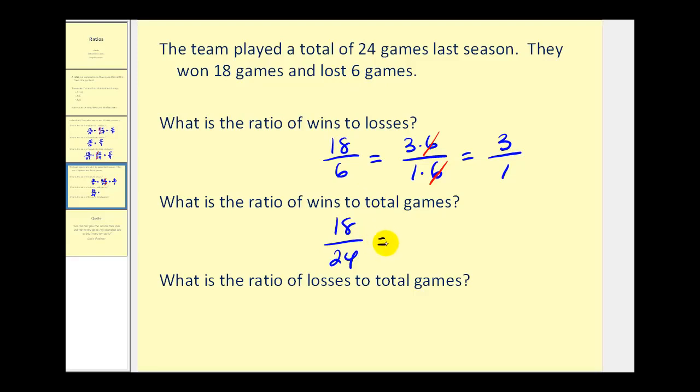This simplifies. The greatest common factor of 18 and 24 would be 6, so 18 is 6 times 3 and 24 is 6 times 4. The simplified ratio would be 3 to 4.